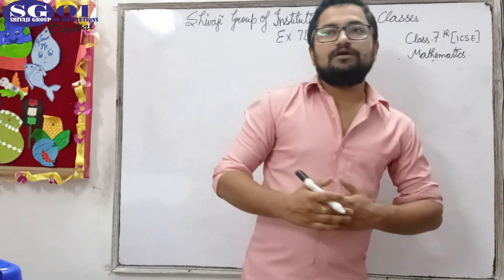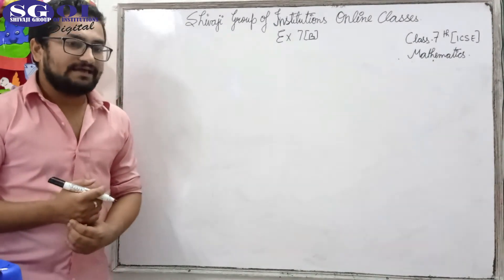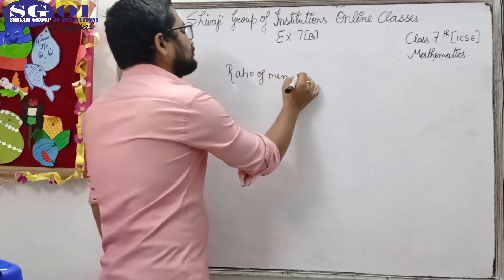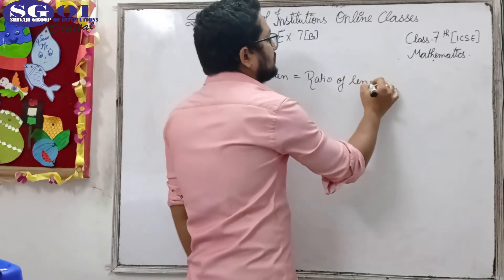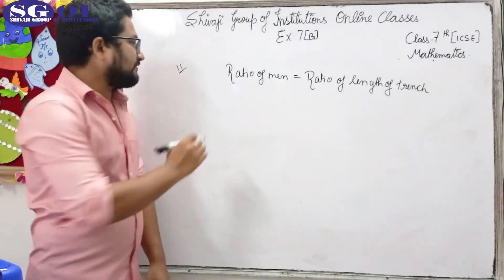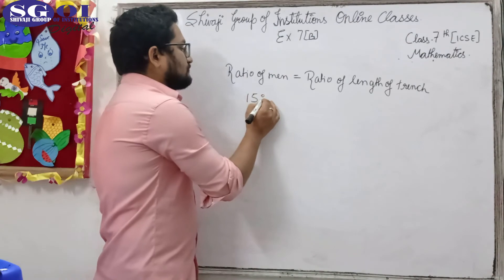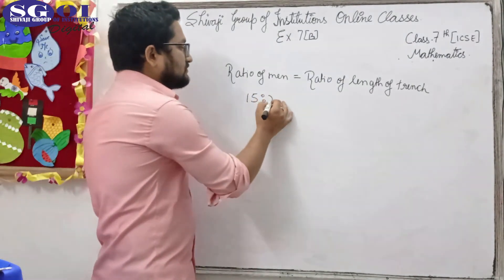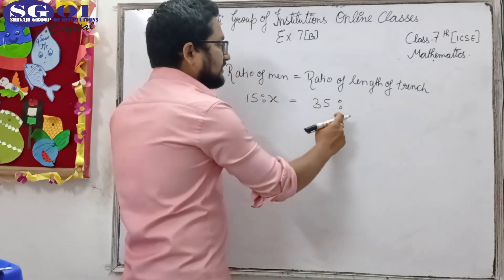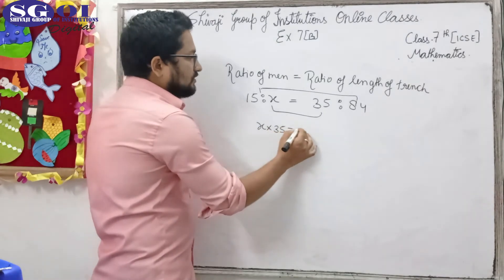Since 1 day appears on both sides, it has no effect on the question and can be removed. The ratio of men should be equal to the ratio of length of trench. So: 15 men to x men equals 35 metres to 84 metres. Using product of means equals product of extremes: x × 35 equals 15 × 84.